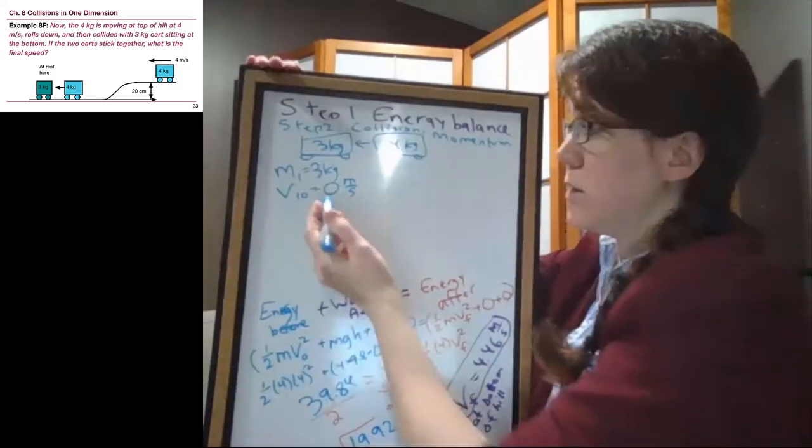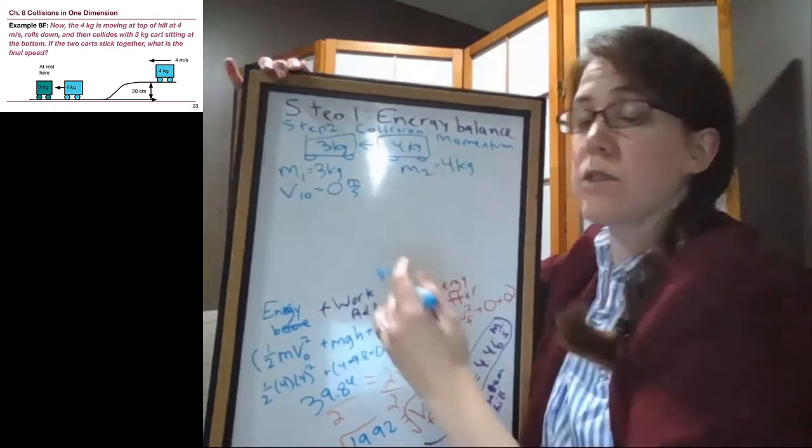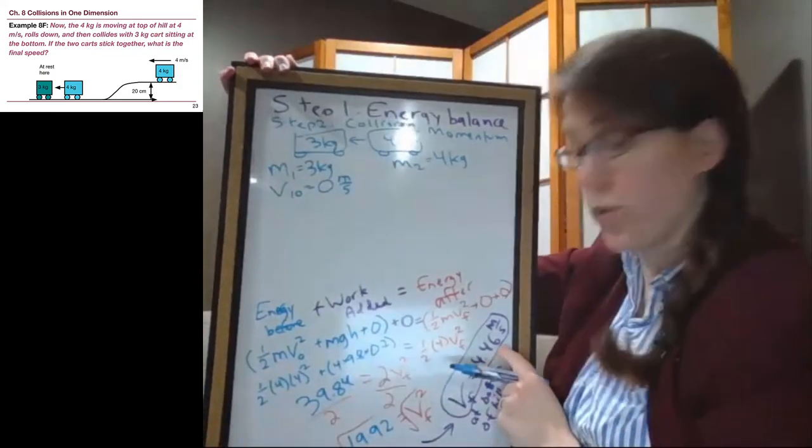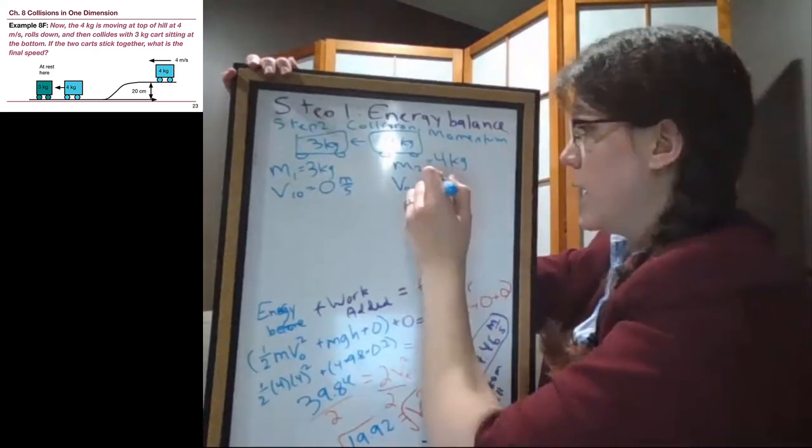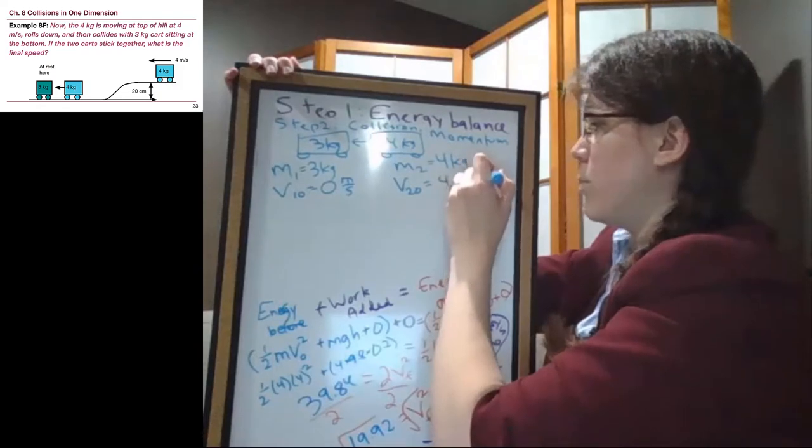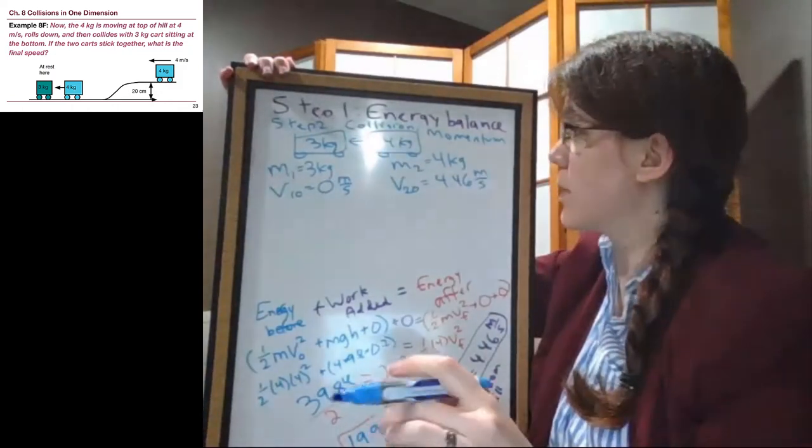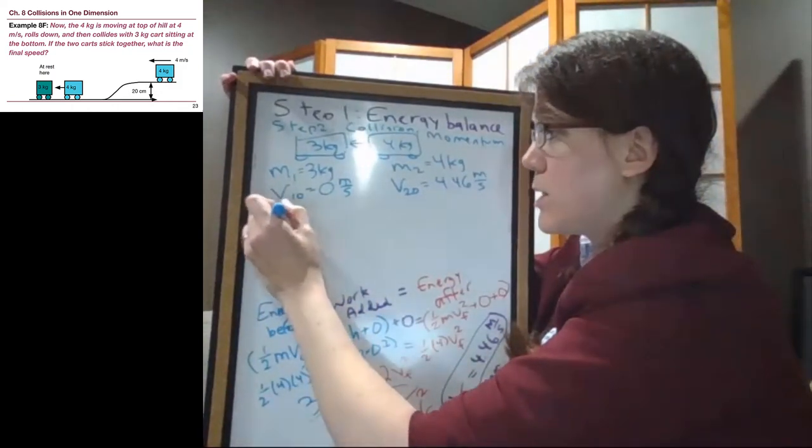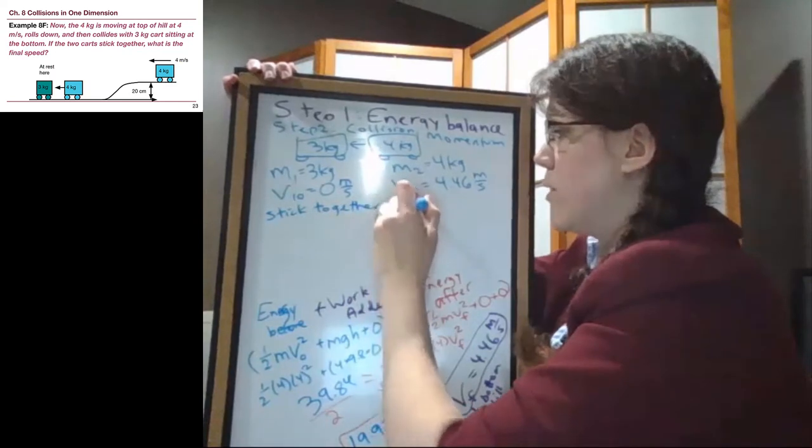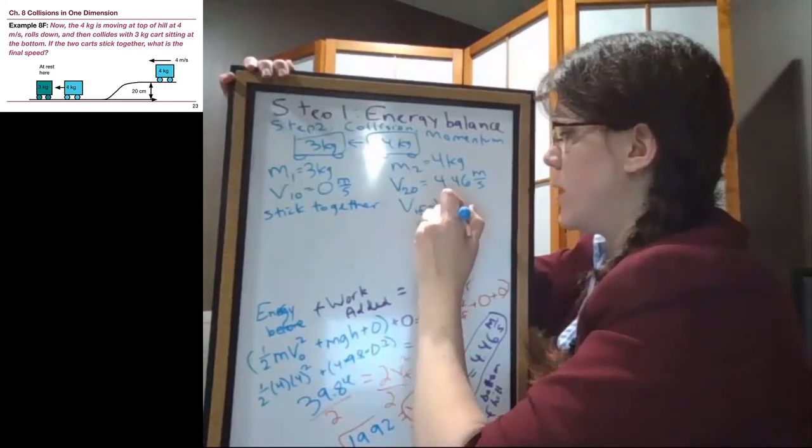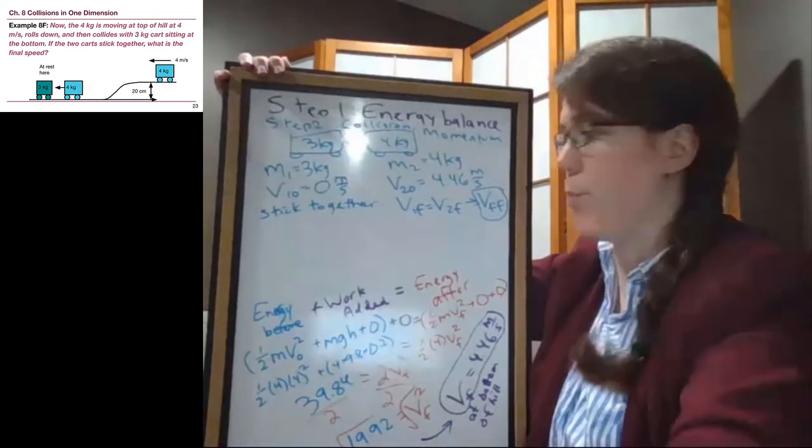So the 3 kilogram block is at rest, so 0 meters per second. This other cart is not moving at 4 meters per second, it is moving at 4.46 meters per second. So that's the initial speed for step 2 is the 4.46 meters per second. It was able to speed up a little bit as it rolled downhill. Now we're told that they stick together, and so just like before, stick together means that V1 final is equal to V2 final, and we might as well call it V final final to make it really obvious that it's the end of the two-step problem.